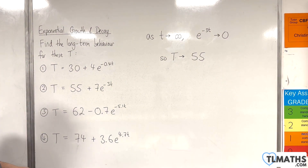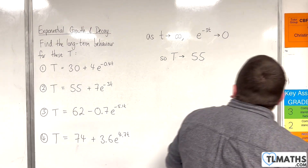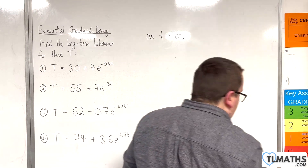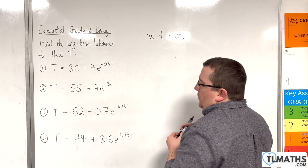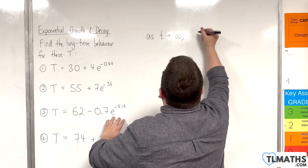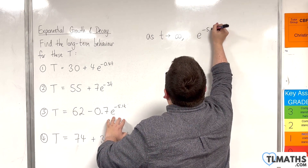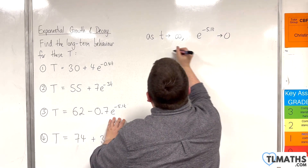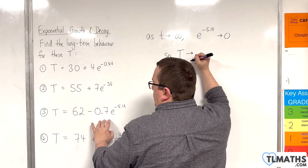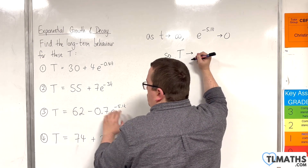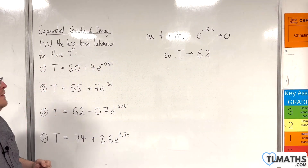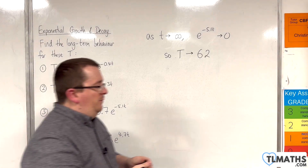At this point, you might be going, oh right, okay — that means long-term behaviour is just going to be that number out in front. So, let's take a look at number 3. As t tends to infinity, we've got e to the minus 5.1t, which is also going to tend towards 0. So, capital T will tend towards 62, take away 0.7 times something that is getting closer to 0. So, T tends towards 62.